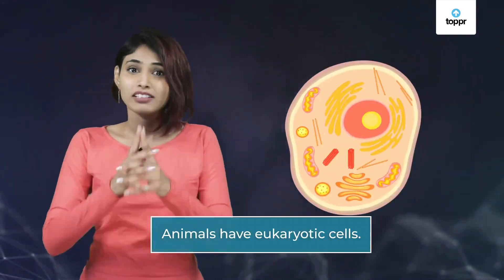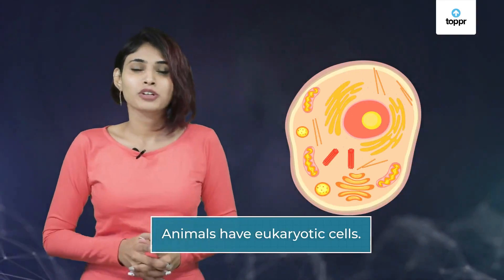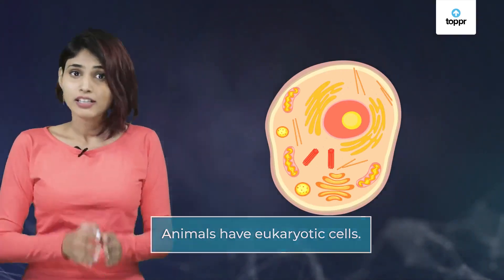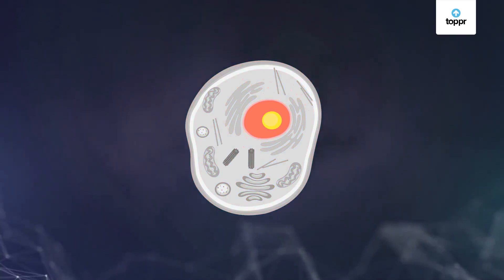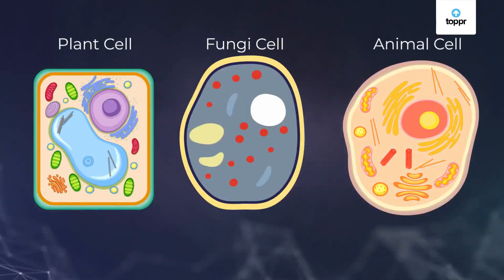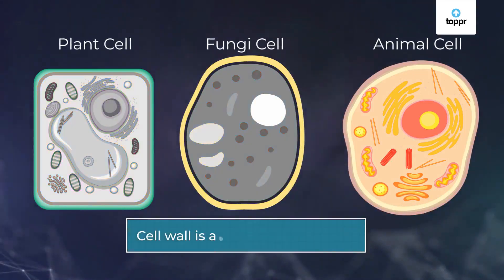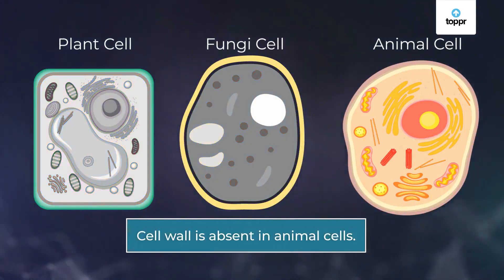The first trait or characteristic of animals is the eukaryotic cell structure, which means that the cells in animals have a well-defined nucleus and membrane-bound cell organelles. But unlike the eukaryotic cells of Plantae or Fungi, they do not have a cell wall.